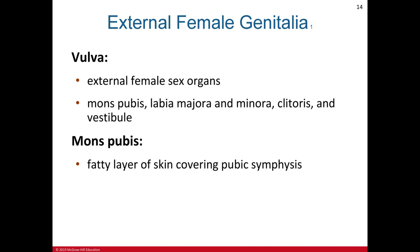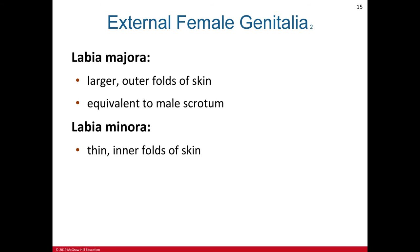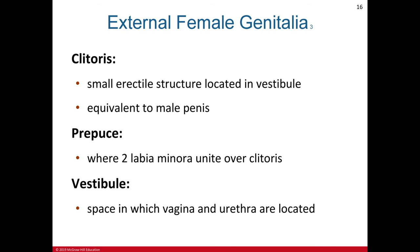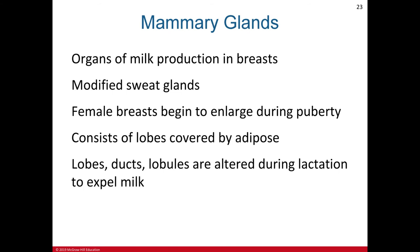The female external genitalia are collectively called the vulva, consisting of five parts: the mons pubis, labia majora, labia minora, clitoris, and vestibule. The mons pubis is the fatty layer of skin covering the pubic symphysis. The labia majora are the larger outer folds of skin, equivalent to the male scrotum. The labia minora are thinner inner folds of skin. The prepuce is where the two labia minora unite over the clitoris.